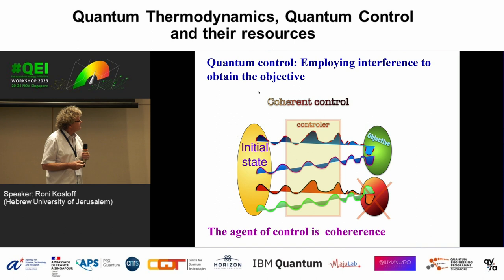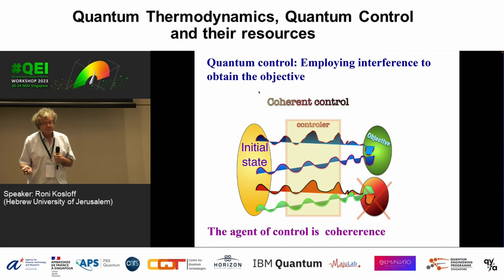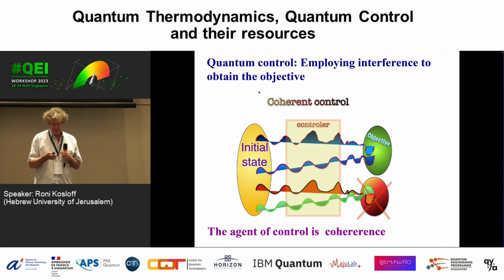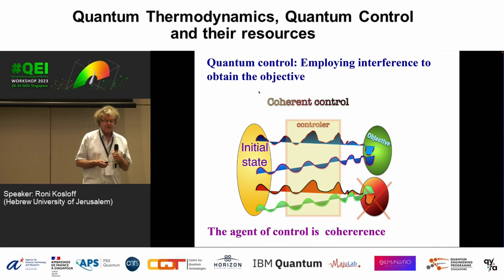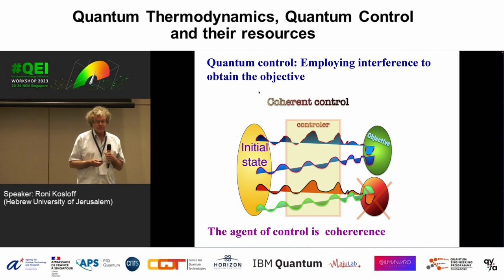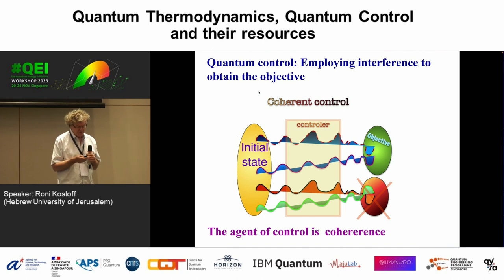The agent of control is coherence — that's what I need. But if I have an open system, I'm going to dissipate my coherence. So there's a trade-off between generating coherence for control and dissipating it because I'm an open quantum system.